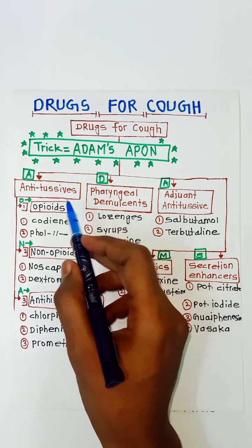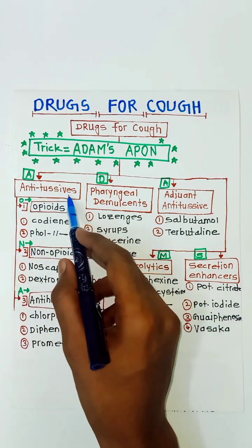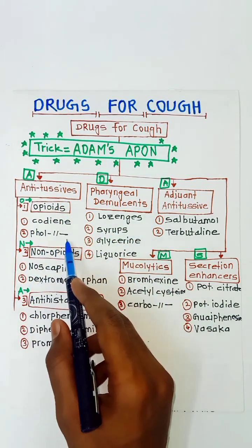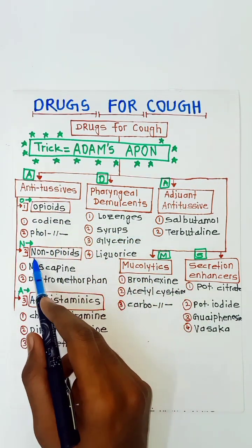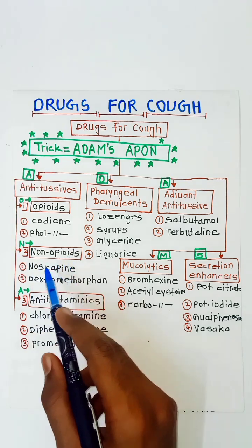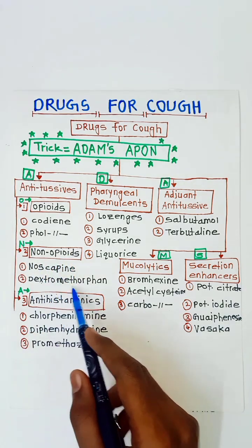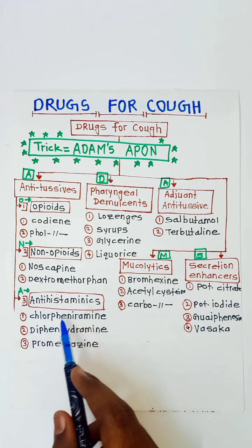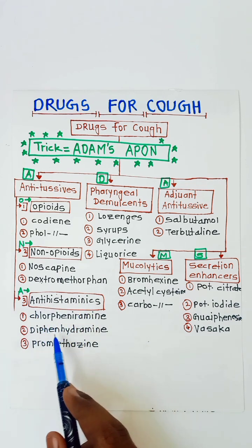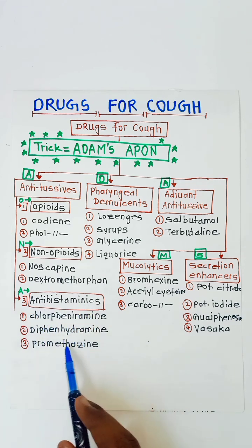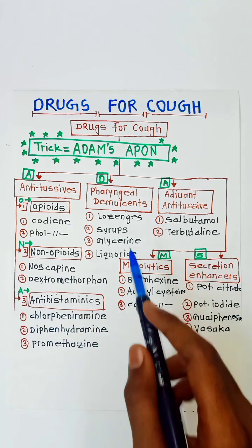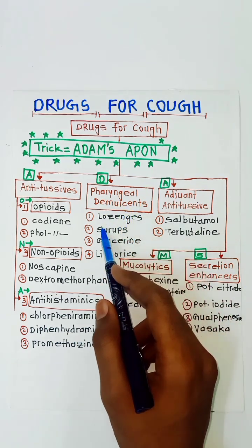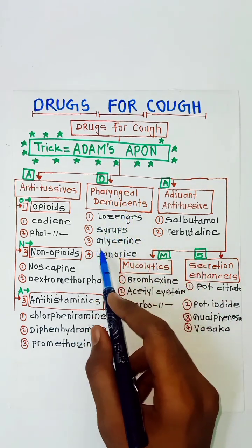In antitussives, under opioids we have codeine and pholcodeine. Under non-opioids we have noscapine and dextromethorphan. Then antihistaminics include chlorpheniramine, diphenhydramine, and promethazine. For pharyngeal demulcents, we have lozenges and syrups.